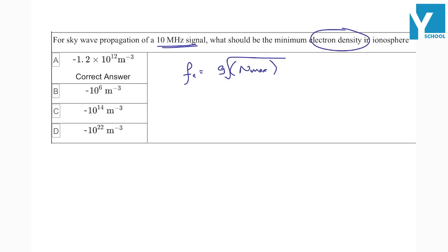So when we want 10 megahertz signal, we can put it here. 10 into 10 to power 6 here below 9, and here is a whole squared. This will give you the density.